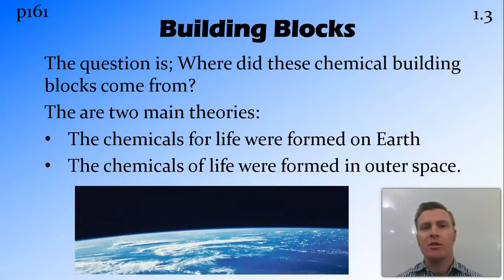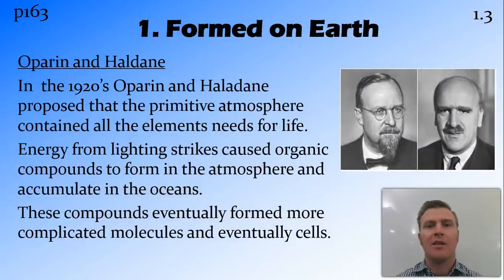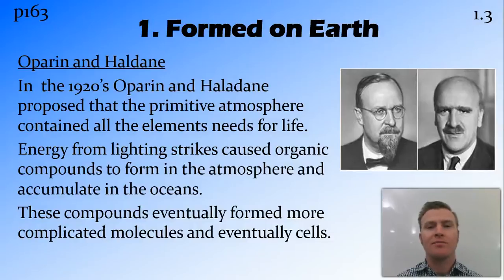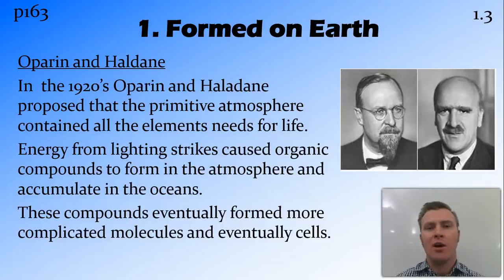There are basically two schools of thought on this. One is that they were formed here on the Earth, and the other is that they were formed in outer space. The idea that these organic compounds were formed on the Earth was first put forward separately by Oparin and Haldane in the 1920s. They stated that the atmosphere had all the elements needed to create these organic compounds, and through energy input — through lightning storms and cosmic radiation — these chemicals could split apart and come together to form organic compounds, which would then dissolve into the oceans in a prebiotic soup, eventually going on to form cells and the very first forms of life.